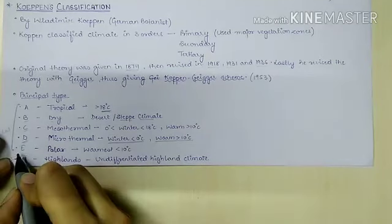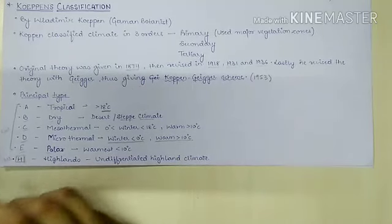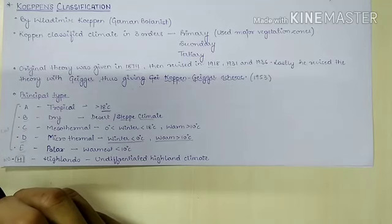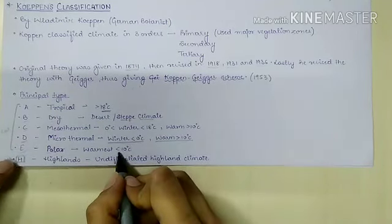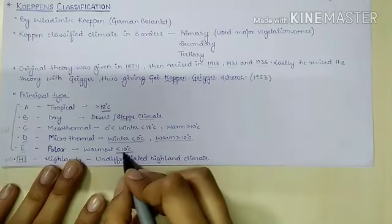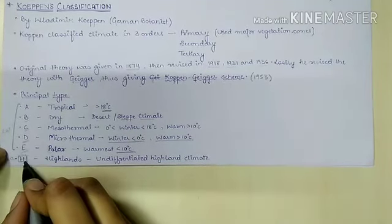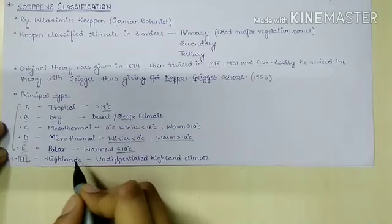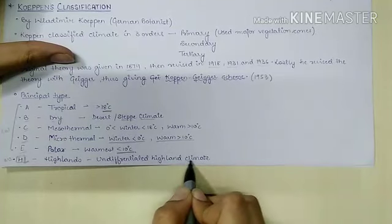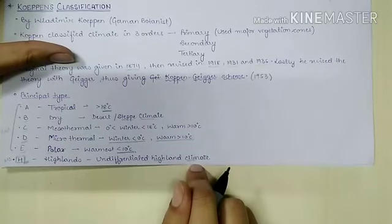Type E represents polar climate, characterized by a summerless season where the average temperature of the warmest month is also below 10 degrees Celsius. Type H represents highlands — undifferentiated highland climate — so wherever we find highland, H will represent them.